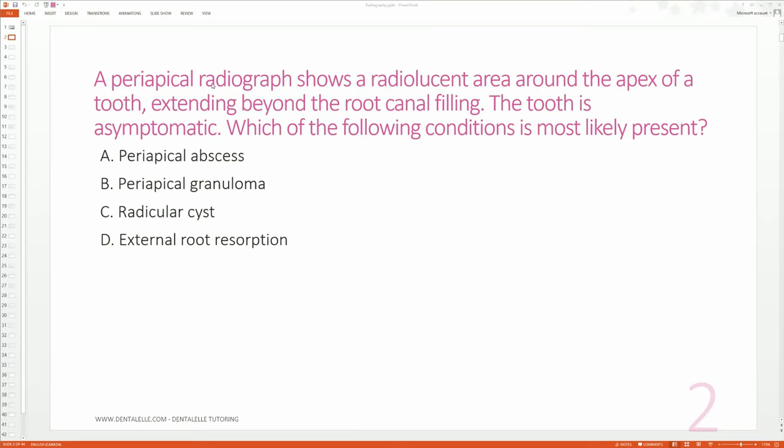With case studies, you have to look at every single part and think about that critical thinking. A periapical radiograph, that's the first clue—it's not a bitewing, it's not a pan, but it's a periapical. Then it shows a radiolucent area. Is that white? Is that black? Do you guys remember? It's black around the apex.